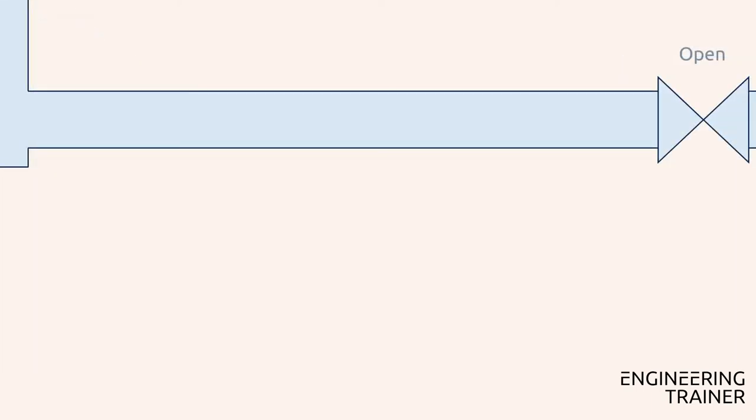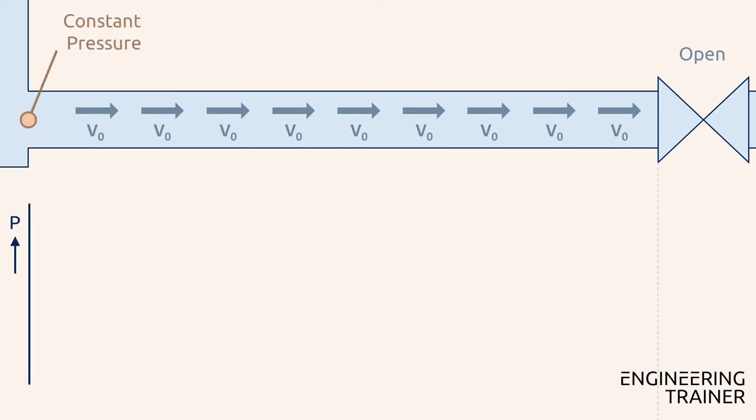Again we see the pipe section with the valve which is open. The water flows from left to right with a velocity v0, and the pressure is constant at the inlet. We visualize the pressure p as a function of the pipe length x. If we neglect friction, this pressure profile shows a straight line for steady state operation.